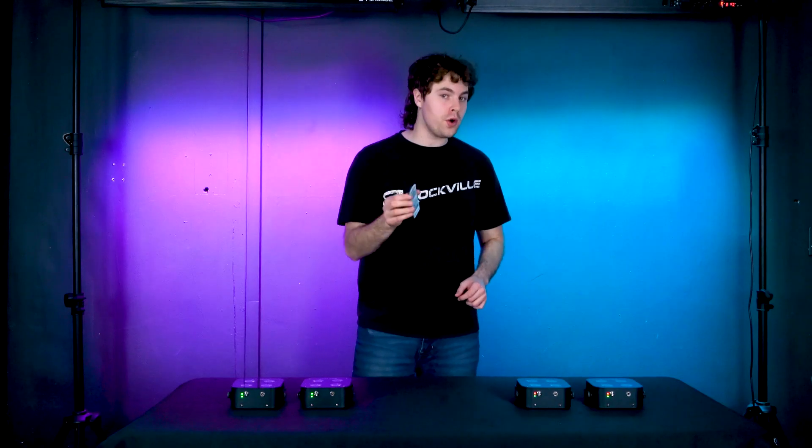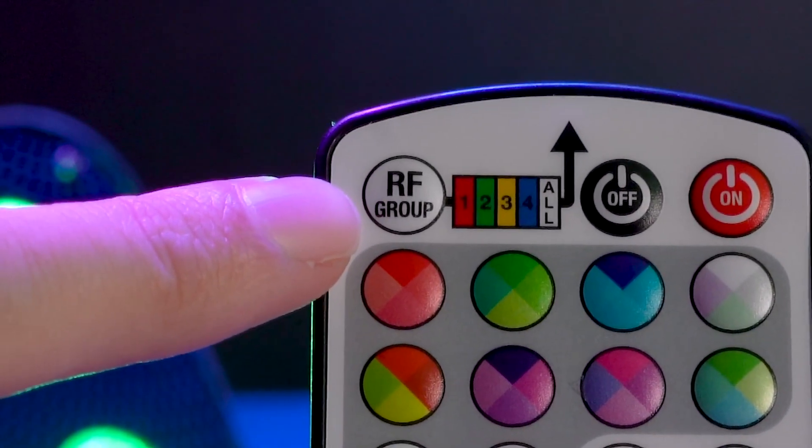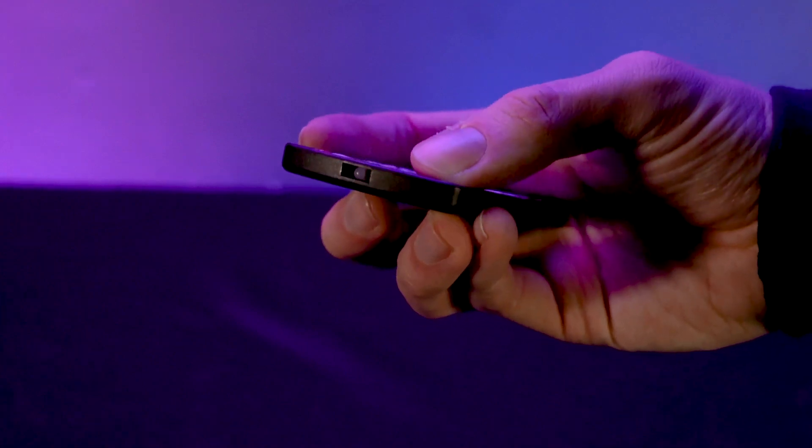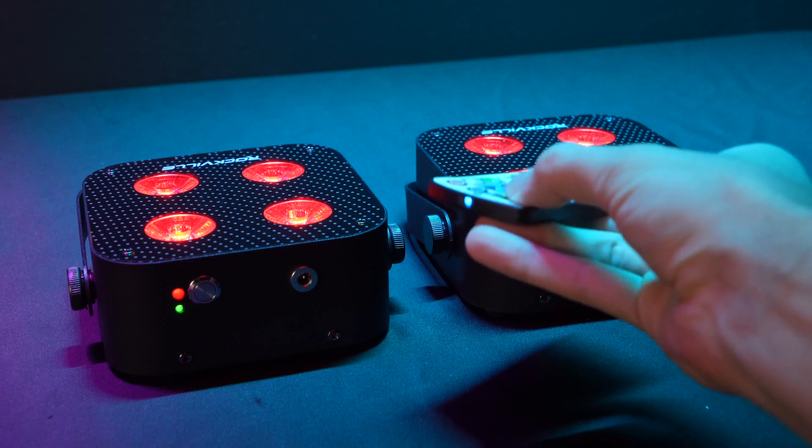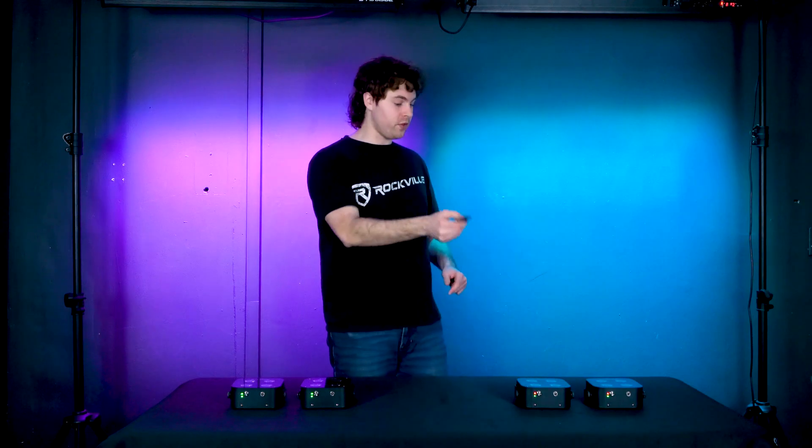I can use just one of my remotes to control each group. To do that, I'm going to use the RF group button here on the top of my remote, and then I'm going to press it until the light on the front of the remote flashes to the corresponding color. So for example, I'm going to press the RF group button on my remote until it flashes red, and now if I use my remote to set my red group into any mode or color, it will automatically follow.